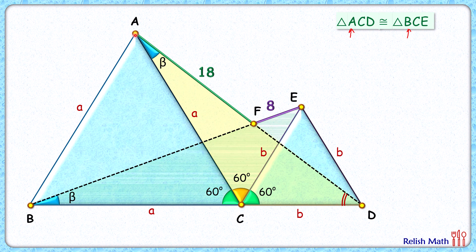For this angle, consider this yellow triangle and apply the angle sum property. This angle will be 180 minus 120 minus beta, so that will be 60 minus beta. And how about this angle E here? In this green triangle, again applying the angle sum property, we get this angle as 60 minus beta.